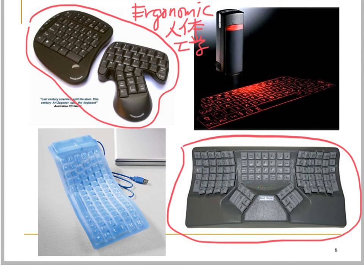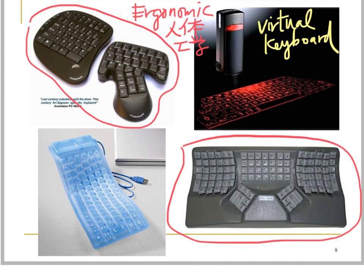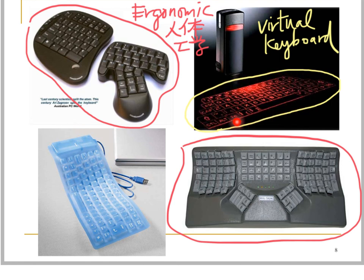The one on the top right corner is a virtual keyboard. It makes use of a laser beam to project the image of a keyboard onto a flat surface, such as a table. You can simply put your fingers on the table and the characters will be inputted into the computer.